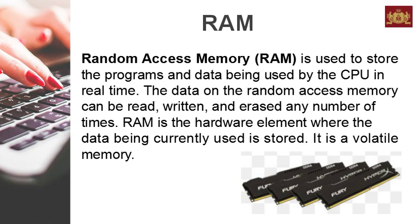Random access memory (RAM) is used to store the programs and data being used by the CPU in real time. The data on RAM can be read, written, and erased any number of times. RAM is the hardware element where the data being currently used is stored. It is a volatile memory.